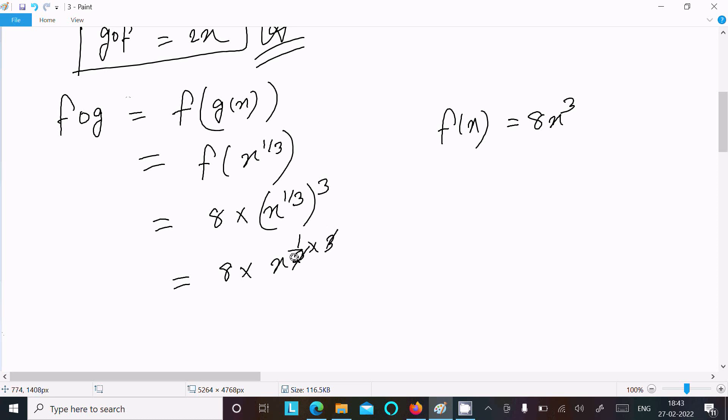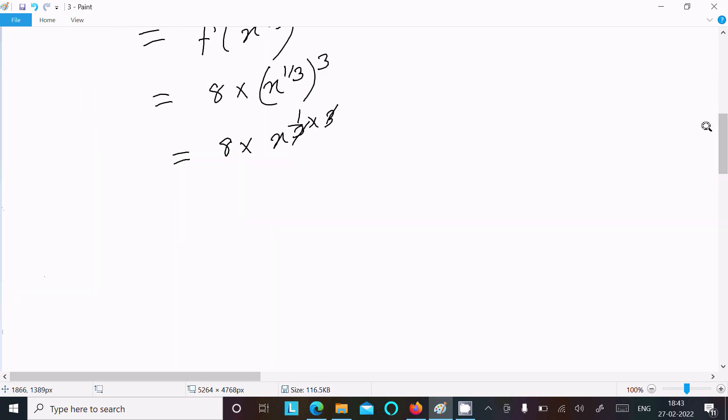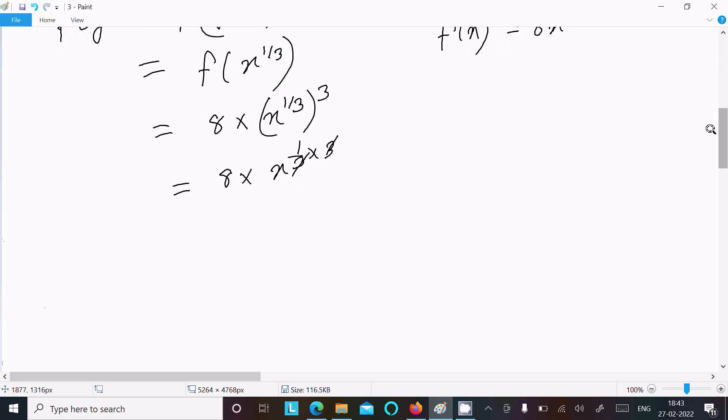So 3, the 3s cancel, then you can get here fog = 8x. So this is the answer for fog and gof.